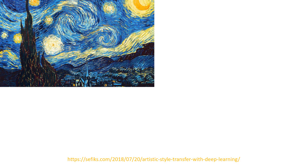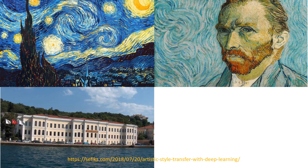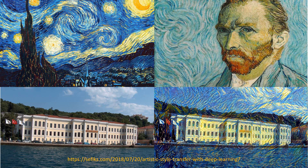This painting is Starry Night by Vincent van Gogh, and van Gogh had a very specific style in his art. This is Galatasaray University, where I graduated — it's located in Istanbul on the Bosphorus. What if van Gogh had painted the Istanbul Bosphorus? Deep learning can answer this question with artistic style transfer, and this is the result — it's really art, right?